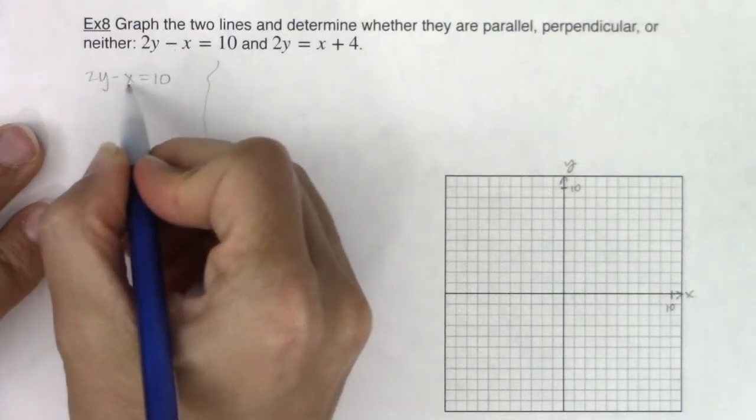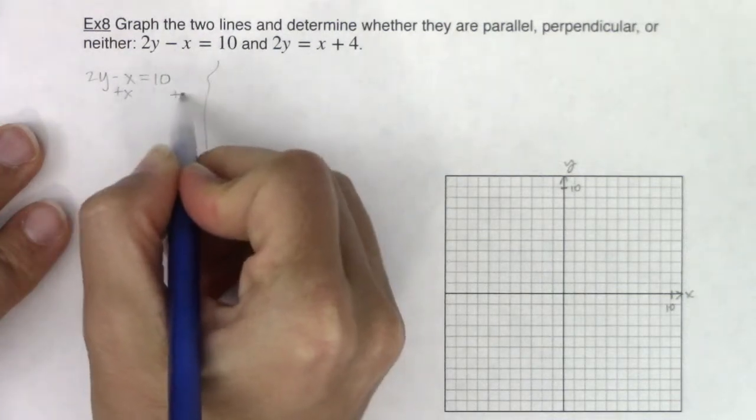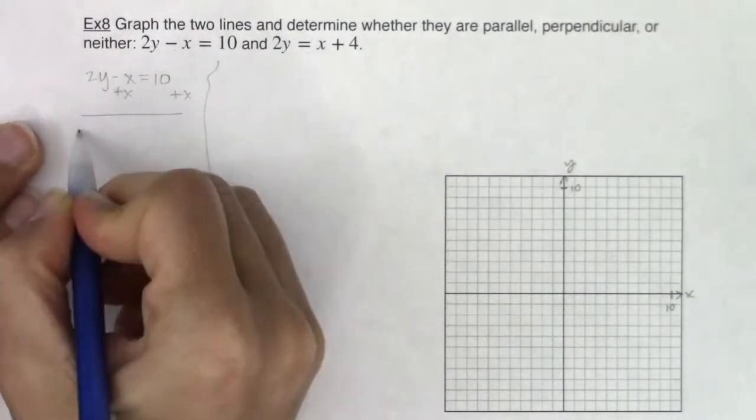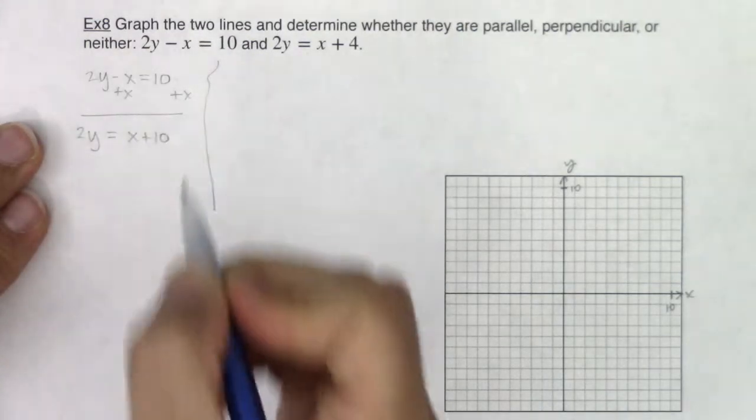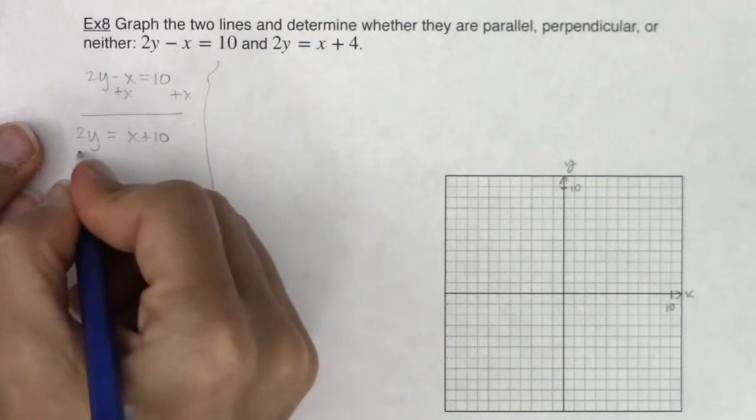So the first thing I'm going to do is add x to both sides. So I see this as 2y equaling x plus 10. And then the next thing I need to do is divide by 2.